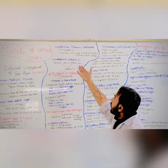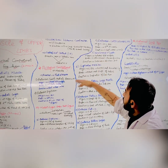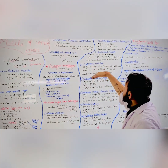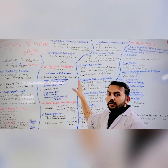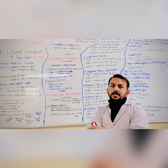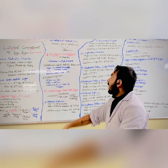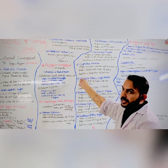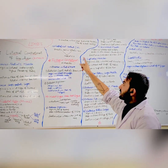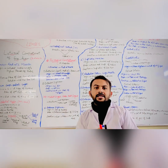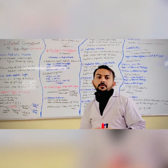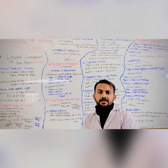The second important topic is Volkmann's ischemic contracture, also known as Volkmann's ischemic syndrome. This condition results in avascular necrosis of the forearm due to loss of blood supply. If you have this syndrome, blood does not spread properly in the forearm. The superficial content of the cubital fossa contains two veins: the basilic vein and the cephalic vein. When these veins come together, they form the median cubital vein, which is the most preferred site for injections.